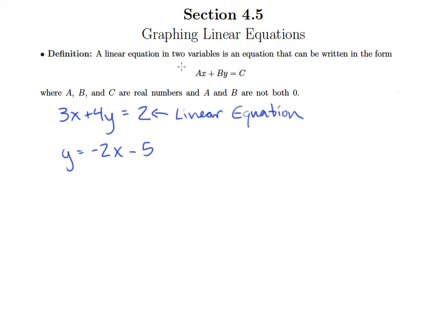But notice what it says. A linear equation in two variables is an equation that can be written in this form. So since I can add 2x to both sides of this and end up with 2x plus y equals negative 5, well, then it's really clear. This matches exactly with the definition. So this is also a linear equation.